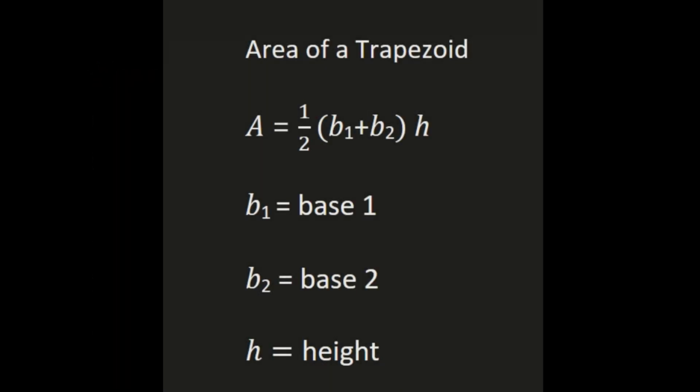The formula for the area of a trapezoid is: area equals one-half times the sum of the bases times the height. B1 is the length of our first base, B2 is the length of our second base, and H is the height of the trapezoid. The height is measured by a perpendicular line between our two bases.